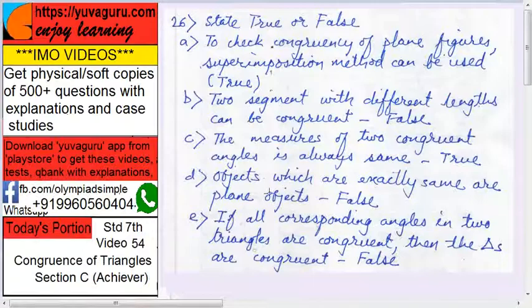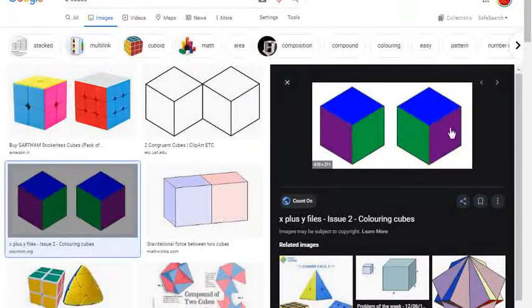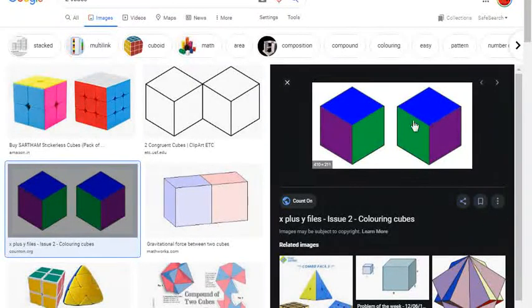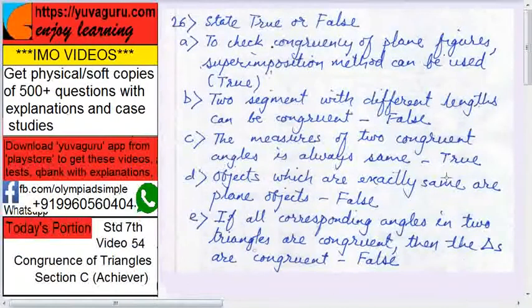Objects which are exactly same are plane objects - that is false. See these two cubes, they are exactly same, but are they congruent? No. Are they plane figures? No, because these are solid objects. Your two hands, they are exactly same, but are they plane figures? No, they are solid objects.